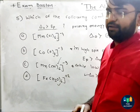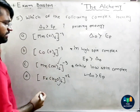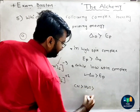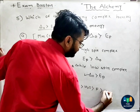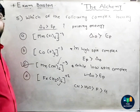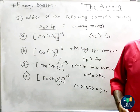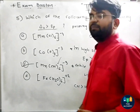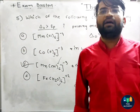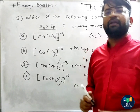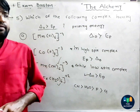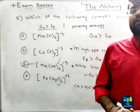At high spin complex, pairing energy is greater than delta octahedral. The answer is option C. I hope this is clear. Please comment if you have any questions and I will answer them. If you haven't subscribed yet, please subscribe and share with your friends.